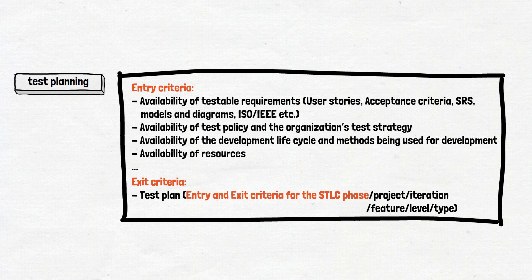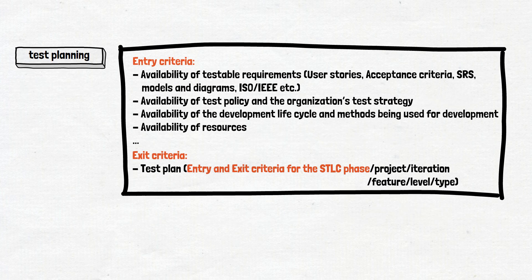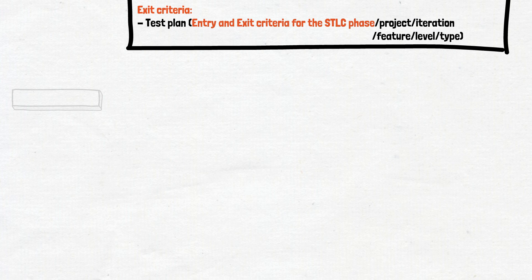The written test plan is the exit criteria for test planning activities. Some may disagree because the test plan is a product and not an exit criteria. In our opinion, the creation of the finished product is the main exit criteria for each stage of the test process.